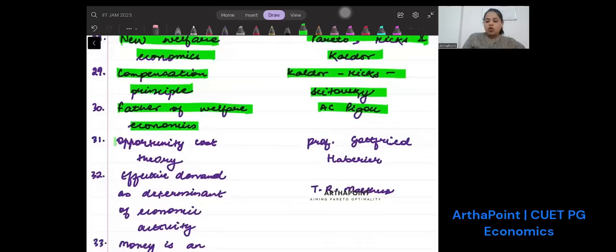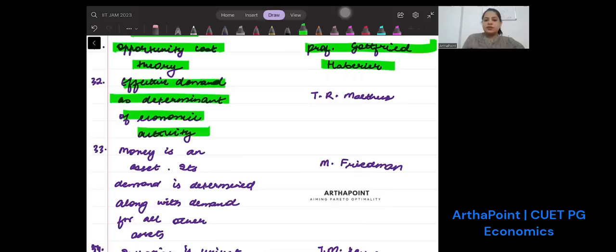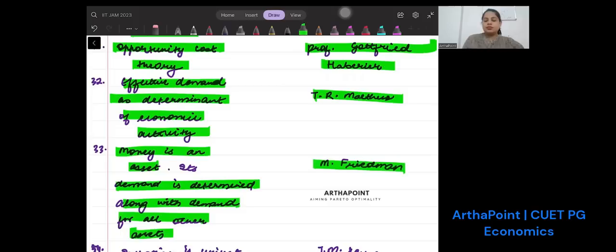Opportunity cost theory is given by Professor Gottfried Haberler. Effective demand as a determinant of economic activity is given by T.R. Malthus. Who stated money is an asset, its demand is determined along with demand of other assets? Friedman.